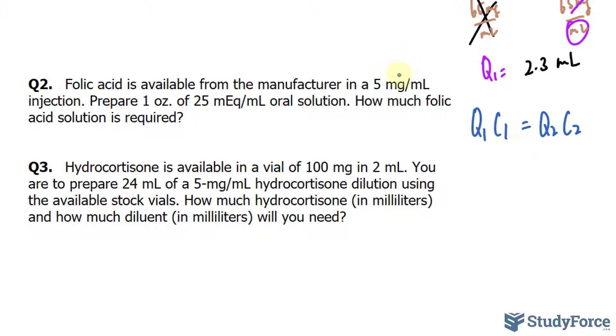According to the label, the folic acid comes in a concentration of 5 mg per milliliter. So this concentration is a weight per volume, and just be mindful of the units because the units that they want you to prepare are in ounces, and here we have milliequivalents, which is completely different than milligrams. What I would recommend in a situation like this is to convert the ounces into the same unit, that's a unit of volume by the way, and it's an imperial unit, convert that into milliliters.